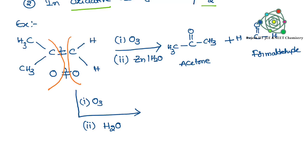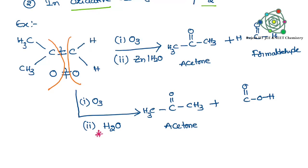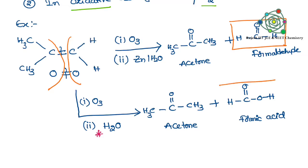Now coming to oxidative Ozonolysis — here we are using ozone and water, and we are not using zinc. The very important point here is that we are not getting formaldehyde; instead we are getting formic acid. So in reductive Ozonolysis we get formaldehyde, and in oxidative Ozonolysis we get formic acid.